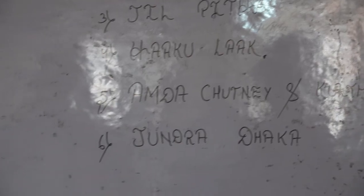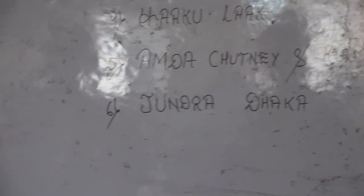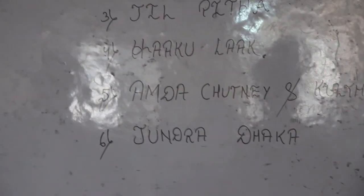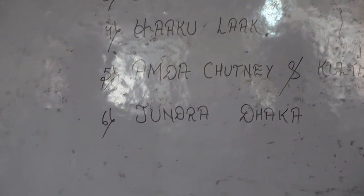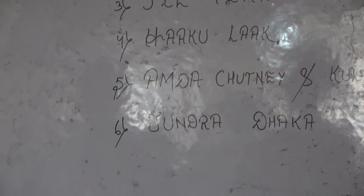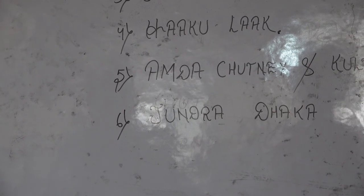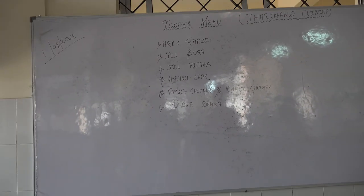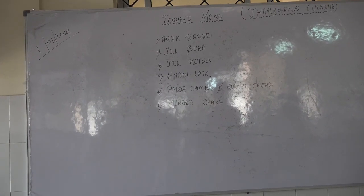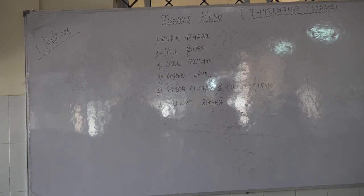The fifth item is amra chutney and kurthika chutney — these are two chutney preparations, as you can see. And then we have the sweet dish, the dessert, which is jundra daga. Jundra here is corn — the indigenous variety of corn that we will be preparing. So this is today's menu, and please come with us for the cooking.